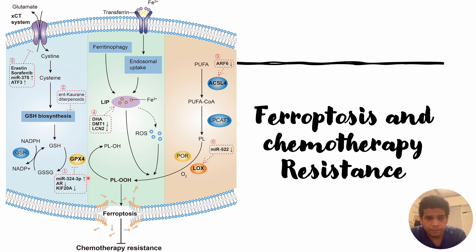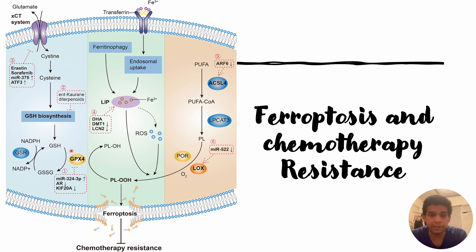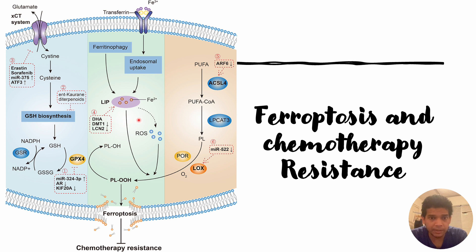Before going into the different inhibitors that can trigger ferroptosis, we need to understand that ferroptosis, as characterized in this figure, can be activated by three different ways: first, by downregulation of GPX4; second, by a decrease in the amount of LIP; and third, by a decrease in the amount of ACSL4.